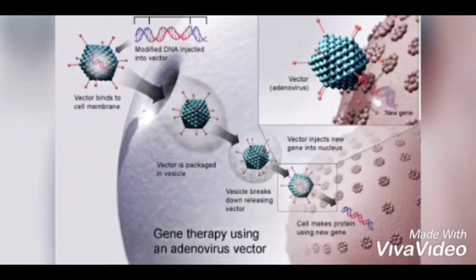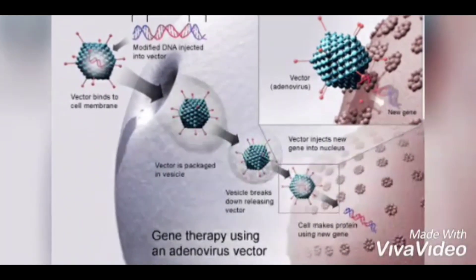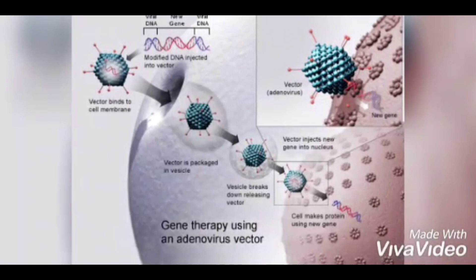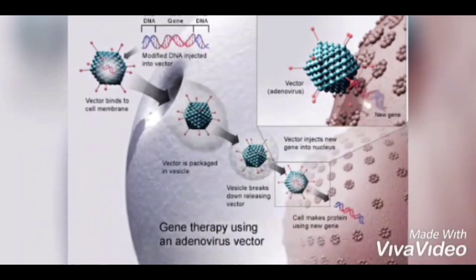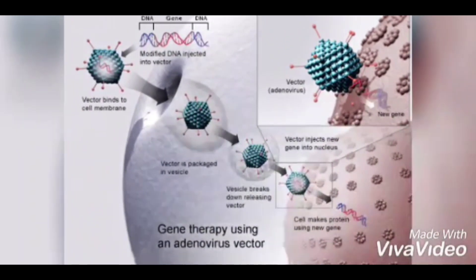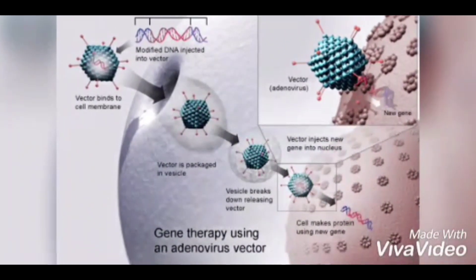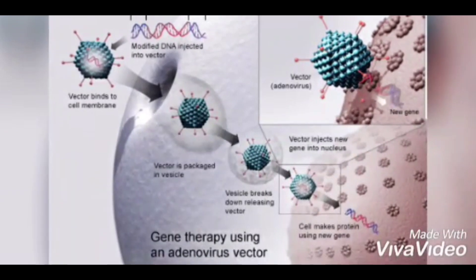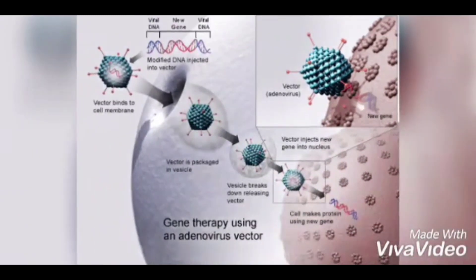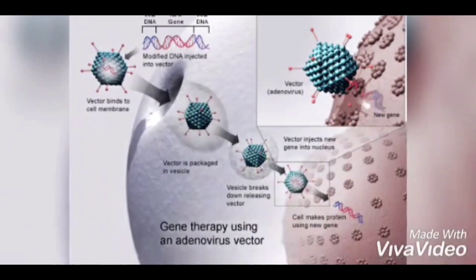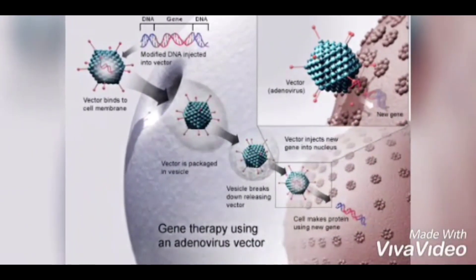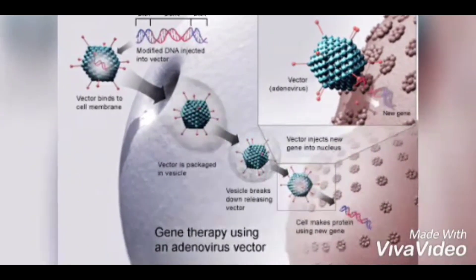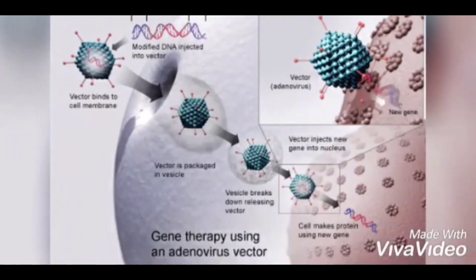Gene therapy may be done inside or outside of the body. When done internally, doctors inject the vector carrying the gene directly into the affected parts of the body. When done externally, blood, bone marrow, or another tissue is extracted from the patient, and specific cells are separated in the lab and cultivated. Once the cells are generated, they are injected back into the patient's body to multiply and carry out their desired function.